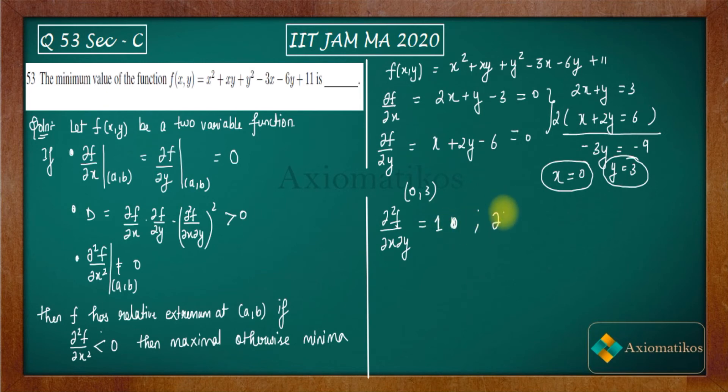Now let us calculate ∂²f/∂x². So if you will do this then you will get 2. So everything is correct, it is non-zero. Also let us calculate ∂²f/∂y². So ∂²f/∂y²...